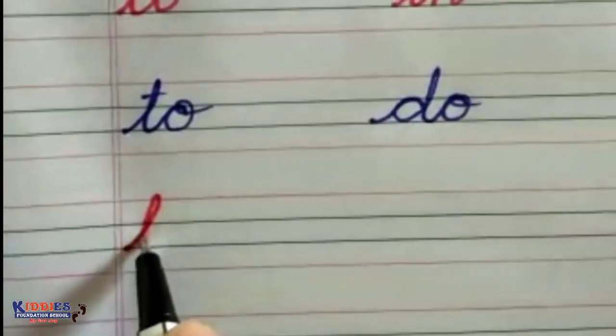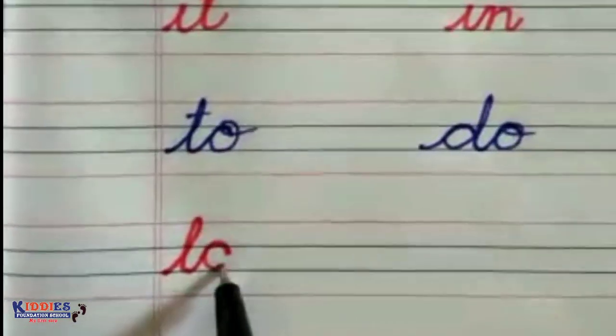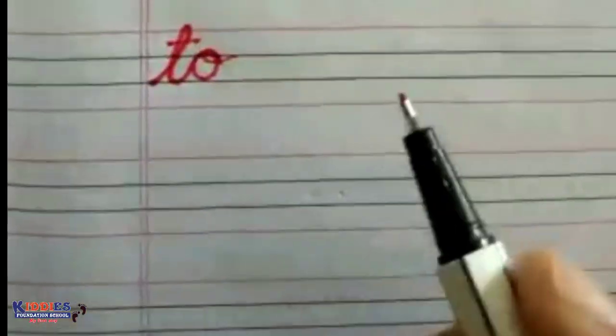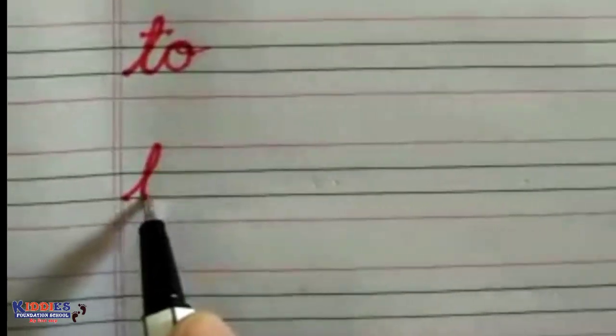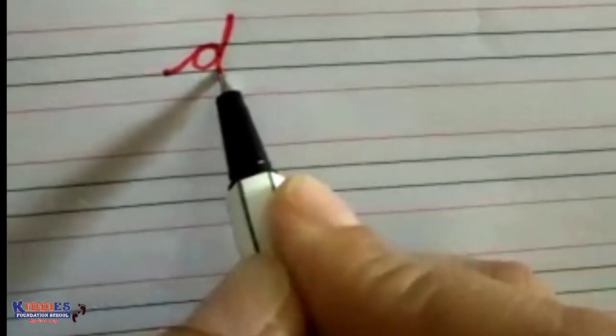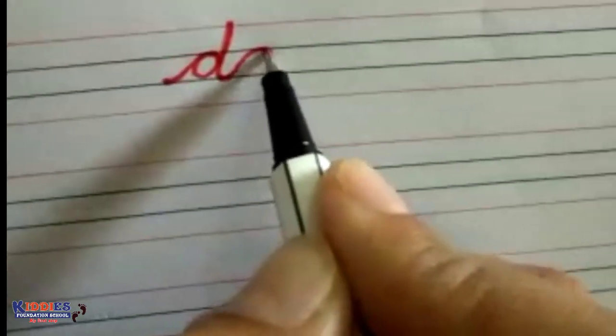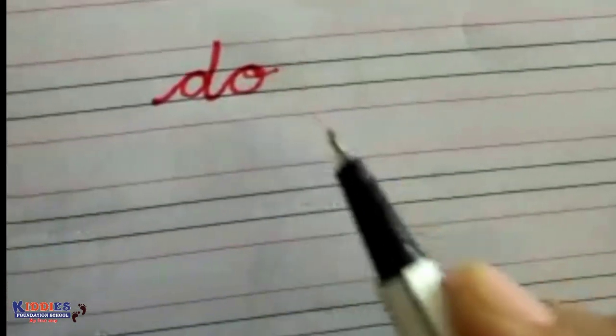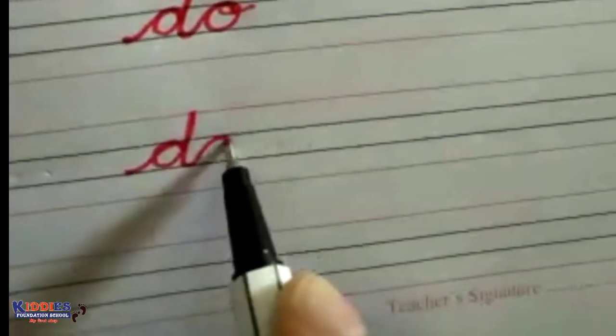Then the two-letter word 'to' — first write the letter 't', then 'o', that's 'to'. Then 'do' — first write the letter 'd' in cursive, then from here write 'o' like this.